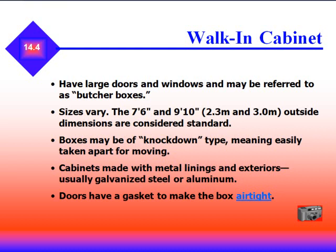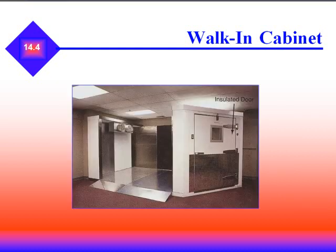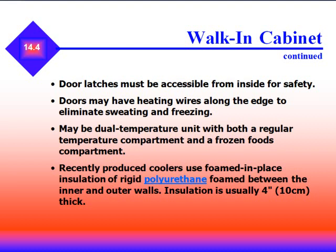Walk-in cabinets have large doors and windows and may be referred to as butcher boxes. Standard outside dimensions are 7 feet 6 inches and 9 feet 10 inches. Boxes may be of a knock-down type, meaning easily taken apart for moving. Cabinets are made with metal linings and exteriors — usually galvanized steel or aluminum — and all doors have gaskets to make the box airtight. Door latches must be accessible from the inside for safety; this is the law. You must be able to get out of the box even if someone blocks it. Doors may have heating wires along the edge to eliminate sweating and freezing.